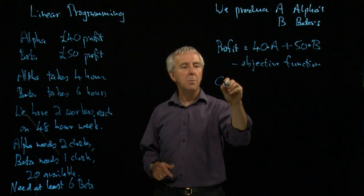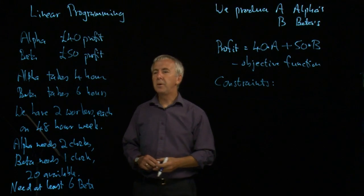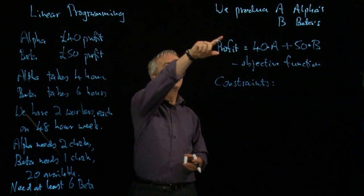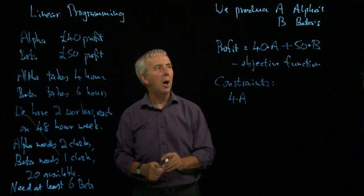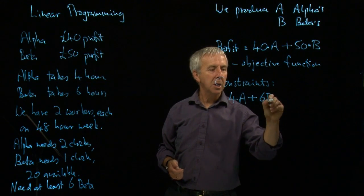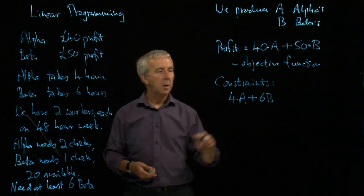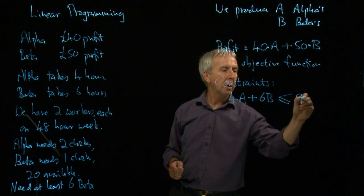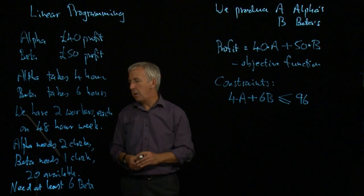Now, what are the constraints, the limitations? Well, first of all, we've got how many workers' hours are available. Each alpha takes four. There's a of them. So the number of hours that the alphas will take will be 4a. The betas take six. So if there's b of them, that will be 6b. But we've only got 96 hours of labour available. So this cannot be bigger than 96. In fact, it has to be less than or equal to 96. That's the time constraint or the labour constraint.